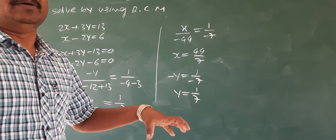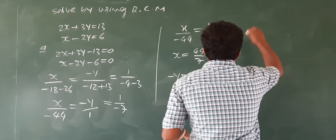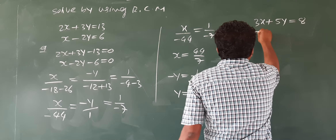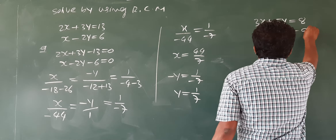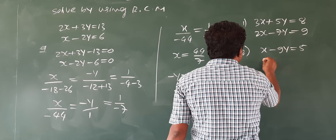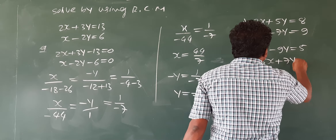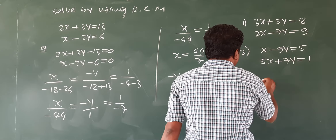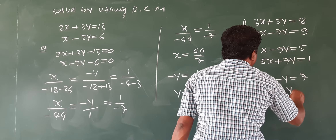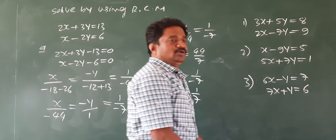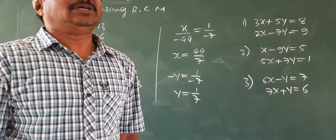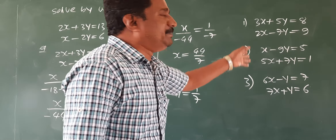I give some practice problems, students. You solve them on your own. First: 3x plus 5y equals 8, and 2x minus 7y equals 9. One more: x minus 9y equals 5, and 5x plus 7y equals 1. One more: 6x minus 1 equals 7, and 7x plus y equals 6. You solve these problems by using rule of cross multiplication.